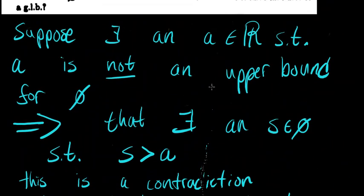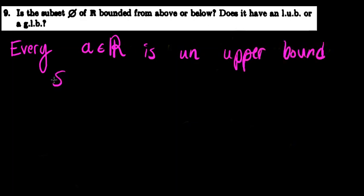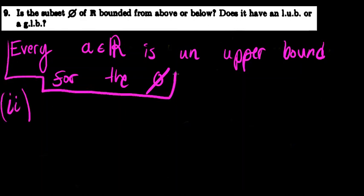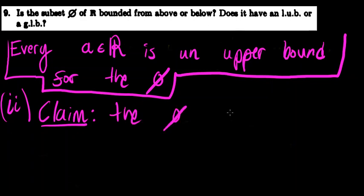Now we can leverage what we just proved: every A in R is an upper bound for the empty set. We're going to use this property to determine whether the empty set has a least upper bound or not. Claim: the empty set has no least upper bound.